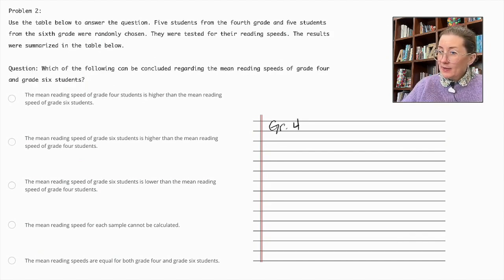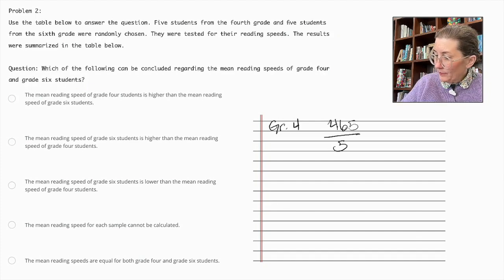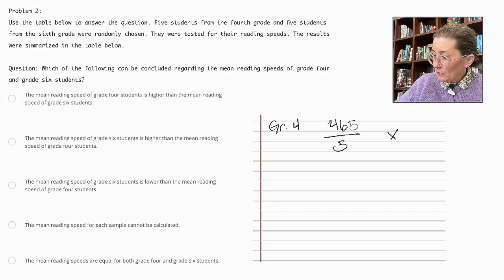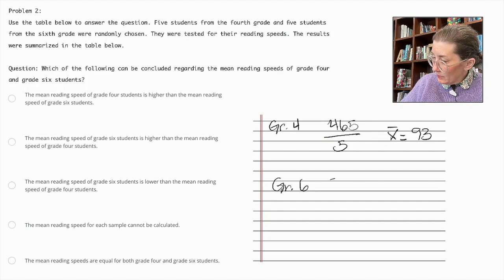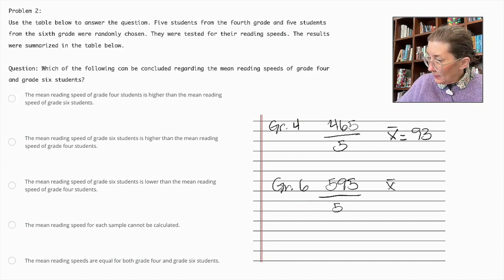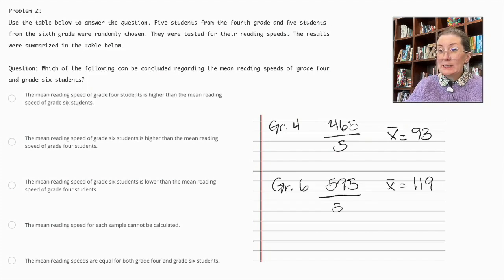Grade 4 students, it's 465 over 5, which the mean is 93. For grade 6, we have 595 over 5, and the mean here is 119. So, the mean reading speed for grade 6 students is definitely higher than for the grade 4 students. So, let's find the correct answer.